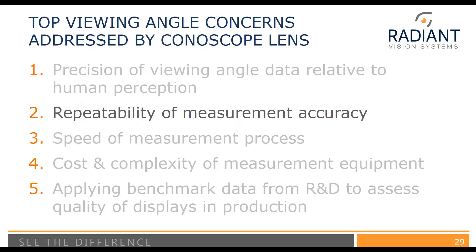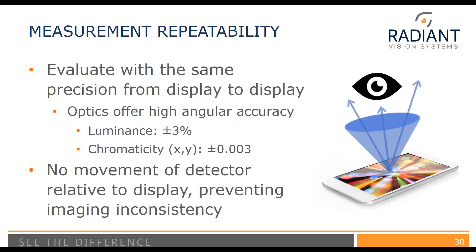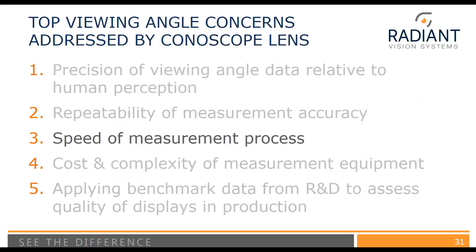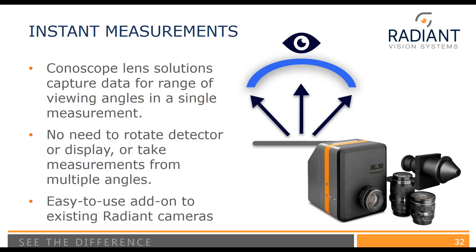How to get repeatability of measurement accuracy? Instead of using a robot, multiple spot colorimeters, multiple two-dimensional measurement devices, or moving the detector relative to the display, you can use a colorimeter with the Conoscope lens and alleviate all of those problems — because there's no movement between the measurement device and the DUT. For speed, using a Conoscope lens you can measure illuminance data from multiple viewing angles with a single measurement. There's no need to rotate the detector or the display, and the Conoscope lens is an easy add-on to existing Radiant Vision Systems cameras.